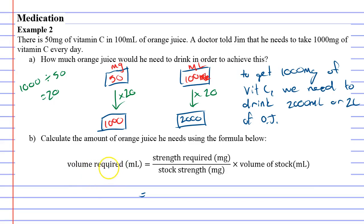It wants you to calculate the volume required, which basically means how much orange juice do I need to drink. At the top of the fraction it says strength required, so the patient requires 1000 milligrams, so that goes at the top. At the bottom is the stock strength, which is the 50 milligrams—the strength of the vitamin C that's in the 100 milliliters of orange juice.